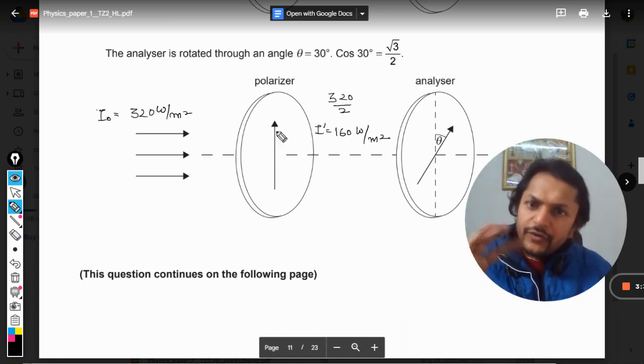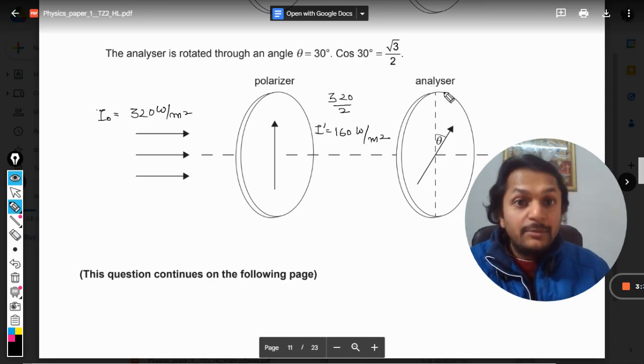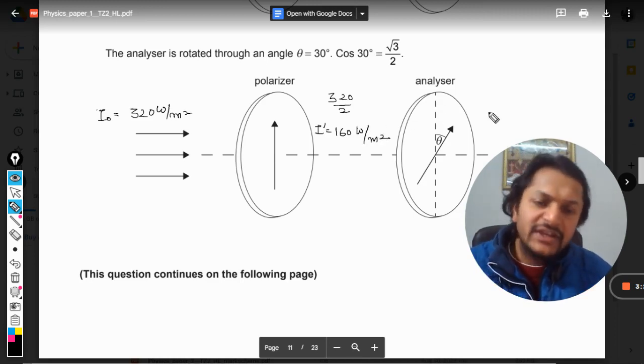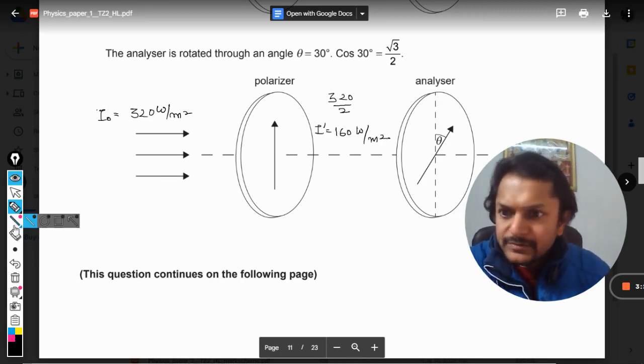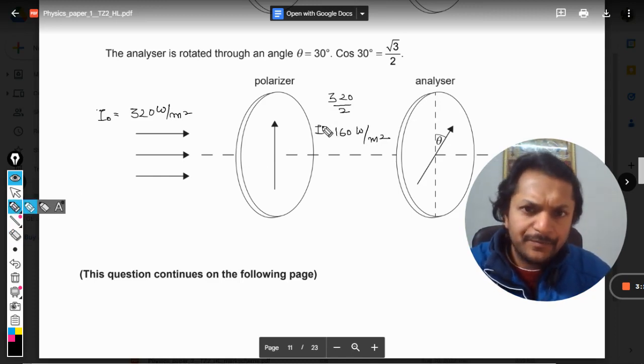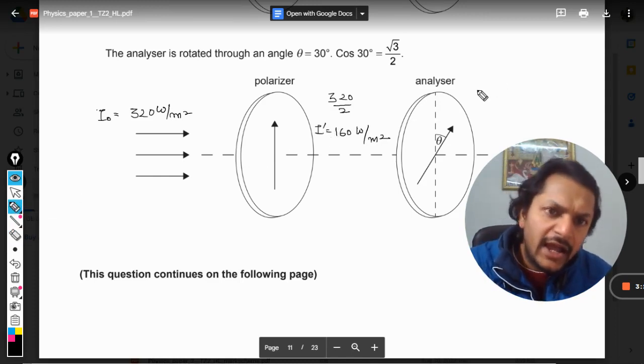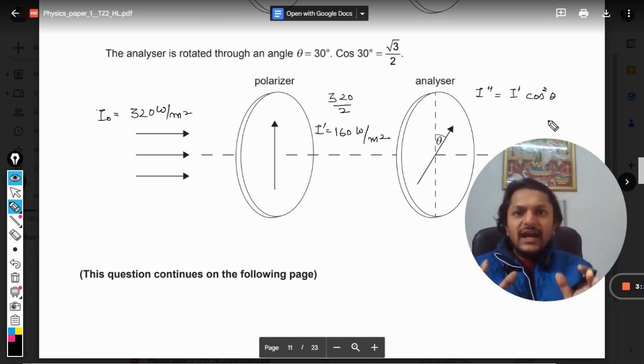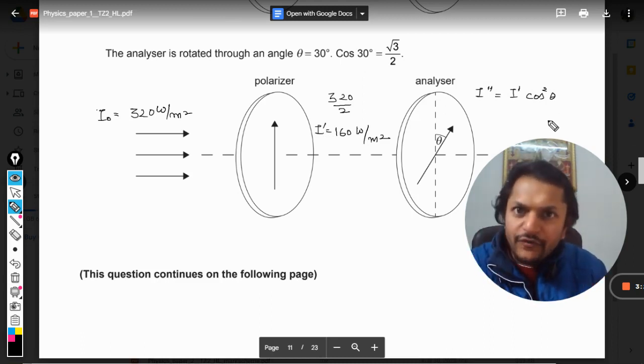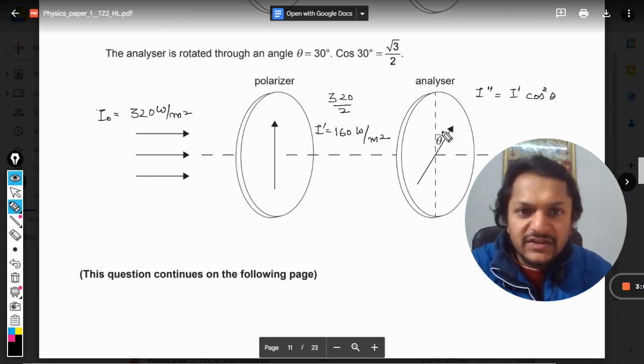But when this light comes out of the analyzer, so let me call this as I double dash. And now this I double dash is given by I dash cos squared theta.